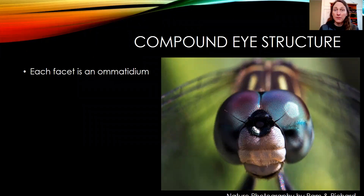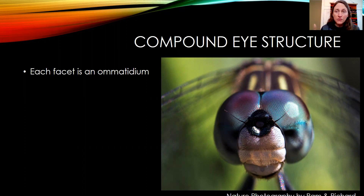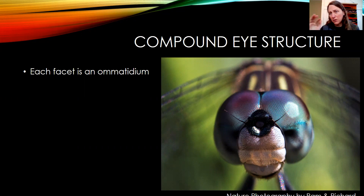Now that you've learned about the properties of light in water, we can go into more detail about different types of eye structures. We're going to talk first about the compound eye and how it's structured. You can see hundreds of facets in this dragonfly eye in front of you — different shapes of facets, bigger ones on the top, smaller ones around the front, different colors. All of that is important to how these eyes work.